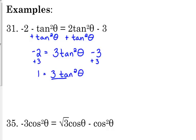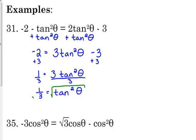Then we divide by three. So we've got one third equal to tangent squared theta. We don't have just plain tangent yet — we have tangent squared. So to get rid of that square, we take the square root of both sides. Anytime we take the square root, we have to consider the positive and the negative.